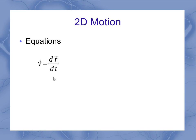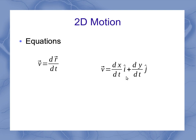If I use derivatives, it works out the same sort of way. It's the position vector, so I've got dx/dt and dy/dt giving me my i and j components. I could write this out as: dx/dt is the x component of the velocity, and dy/dt is the y component of the velocity.